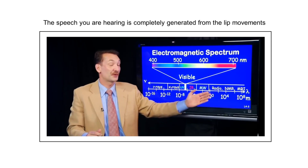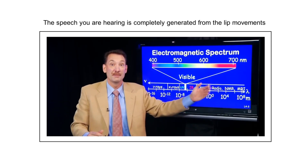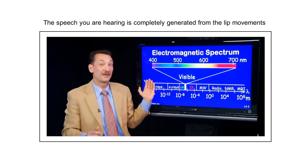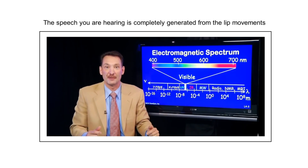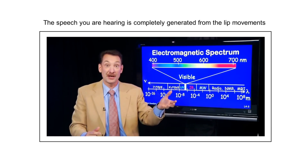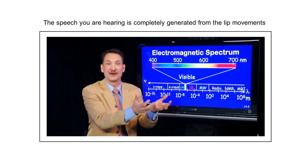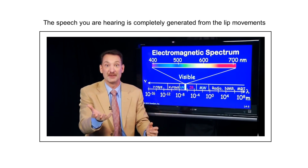We talk about the relationship between the wavelength, the frequency, and the speed of electromagnetic radiation. In fact, the product of the wavelength and the frequency is the speed. The speech you just heard is generated solely from the lip movements of the speaker by our Lip2Wave model.